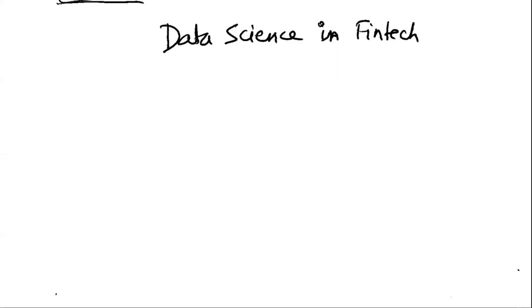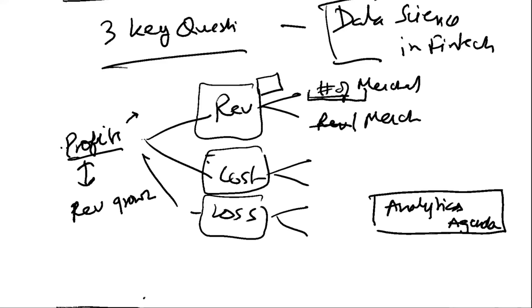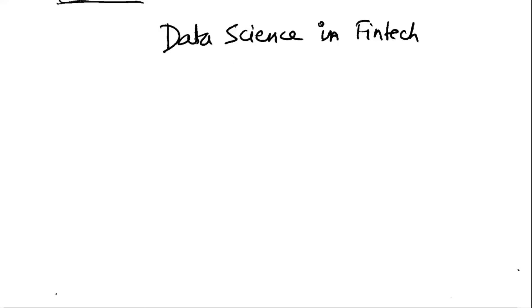As I was explaining last time, once you have built your KPI DuPont across the lines of revenue, cost, and loss — for many fintechs, loss is one of the most important drivers of profit, which means they have to really manage loss down. That is why risk is a very important function in most fintechs.